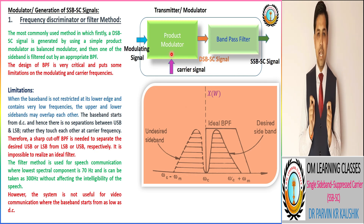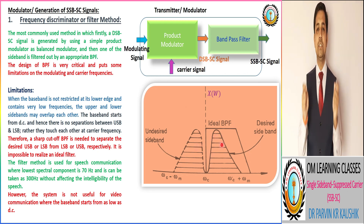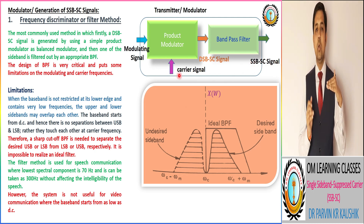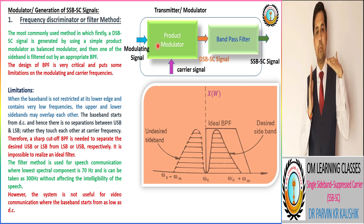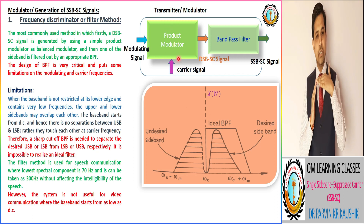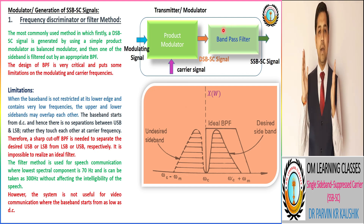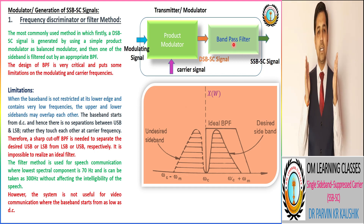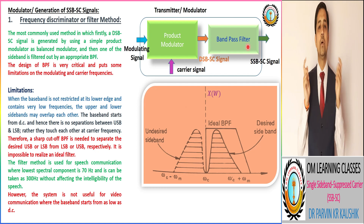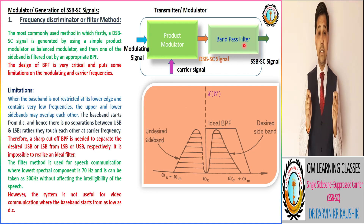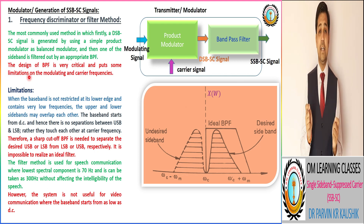A balanced modulator is used and then one of the sidebands is filtered out by an appropriate band pass filter. As shown in the diagram, we have a modulating signal and a high frequency carrier signal. Using a product modulator as a balanced modulator, we multiply both signals to get a DSB signal, and from the DSB signal we get an SSB signal by passing it via a band pass filter centered on the upper or lower side.